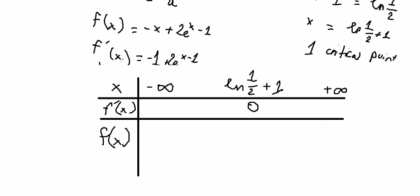On the left, if we try to put 0 in here, we get negative. If we try to put 3 in here, we get positive. So the graph should be like this. So we have negative in here and we have positive in here.